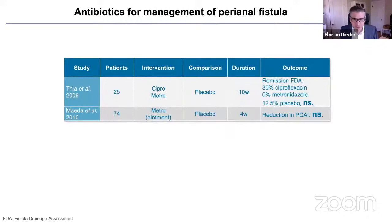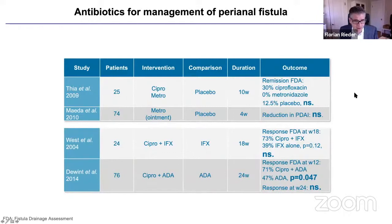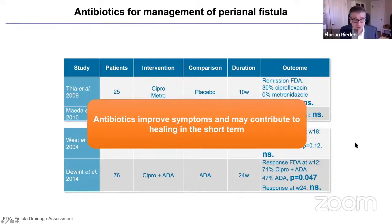The first drug class is antibiotics. We do not have much controlled data, and it is all short-term. Ciprofloxacin and metronidazole showed nominal improvement over placebo in fistula remission, but results were not significant. When ciprofloxacin is combined with biologics such as adalimumab at 24 weeks, a significantly improved response was found compared to biologic alone — but again, only short-term data. Antibiotics improve symptoms and may contribute to short-term healing, but long-term data is missing, and side effects may prevent long-term therapy.